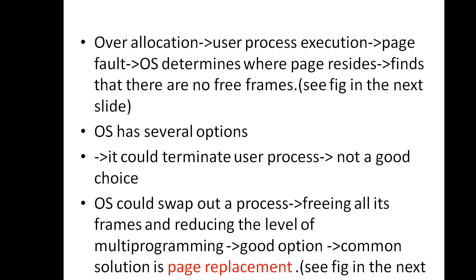When a page fault occurs, the operating system determines where the desired page is residing on the disk and must bring it back to main memory. It will find the page on disk but must also find a free frame in main memory. However, if there are no free frames, the page cannot be loaded — indicating all of the memory is in use.